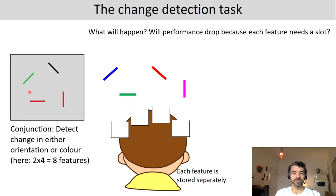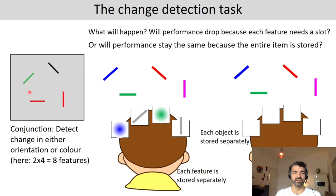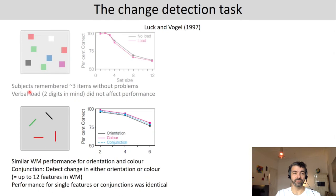This is illustrated here — each feature stored separately versus each object stored separately. Luck and Vogel found that you can store conjunctions as tied objects in working memory rather than individual features. It doesn't matter whether you have to remember both features of an item or just one feature. Performance is mostly affected by how many items are on the screen, not by how many features.